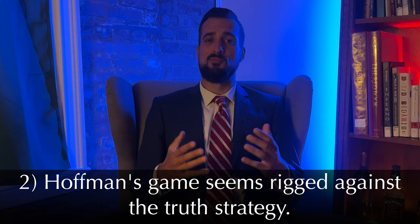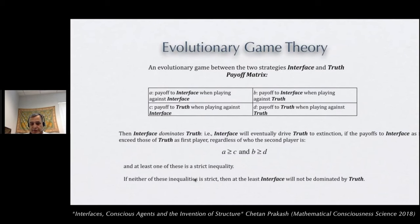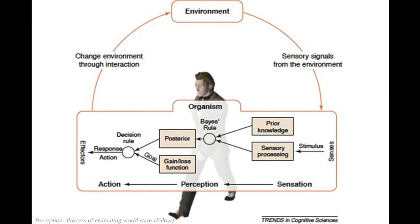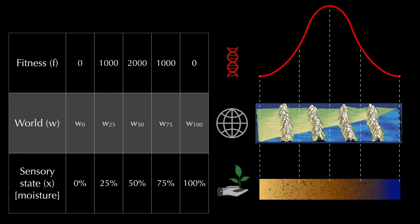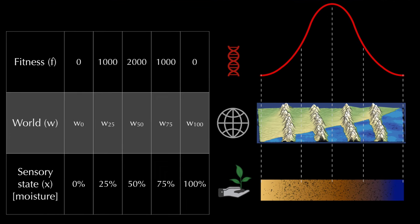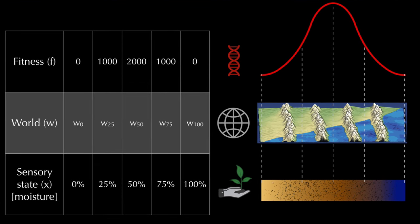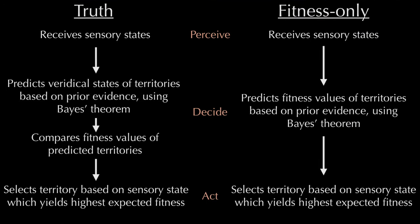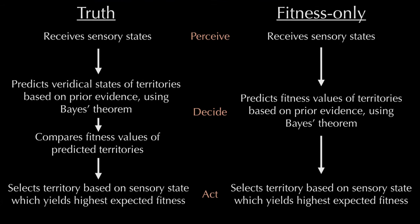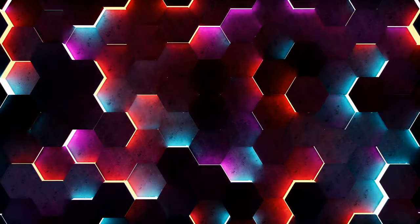Number two: Hoffman's game seems rigged against truth. I had this same critique when I began digging into the game theory strategies. But as I learned more about perceptual science, their model seems to be both as fair and straightforward as possible for testing their hypothesis. There's an objective world with many territories of various resources. Each territory maps to a fitness value, and each territory maps to a perceptual sensory state. Truth models the veridical world as best it can, then considers fitness possibilities. Fitness-only takes a blind shortcut and models only for fitness.